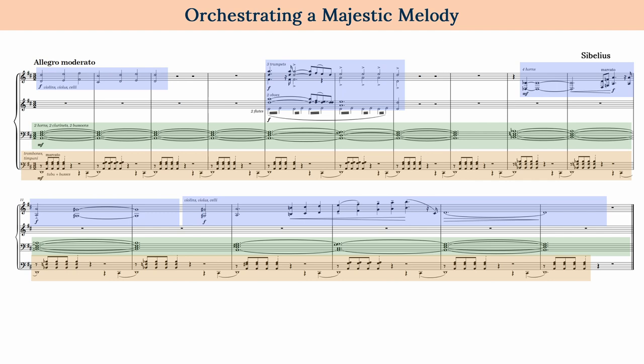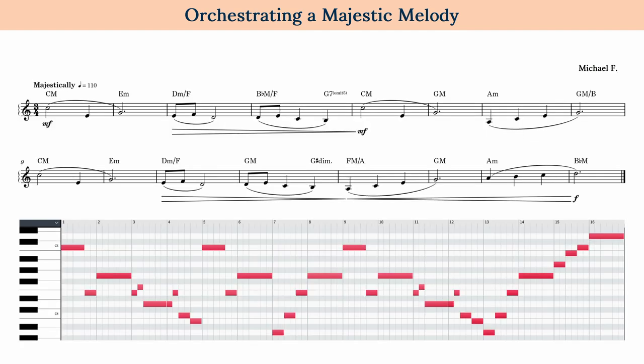Now that I've studied this orchestration, I feel inspired to come up with an orchestral texture of my own using Michael's melody and chords. I won't plagiarize or copy Sibelius exactly, but rather I'll use similar strategies to build my own texture that works specifically with the melody and chords. I'll make three different versions — small, medium, and large — meaning different numbers of instruments and overall density of orchestration. I'll start with the small-scale orchestration.